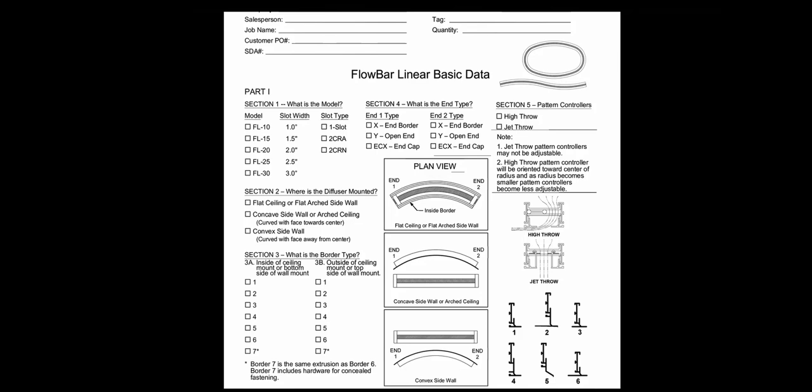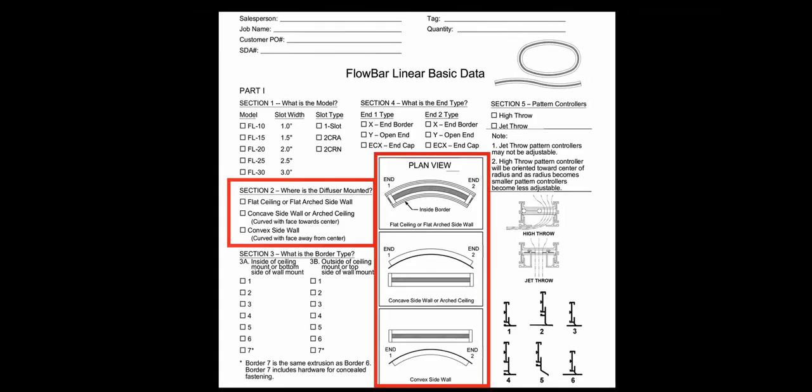Using the flowbar order procedure as an example, we can see that in addition to the border style, number of slots, throw pattern, and end fabrication, there are three main types of curving based on how the unit will be mounted.